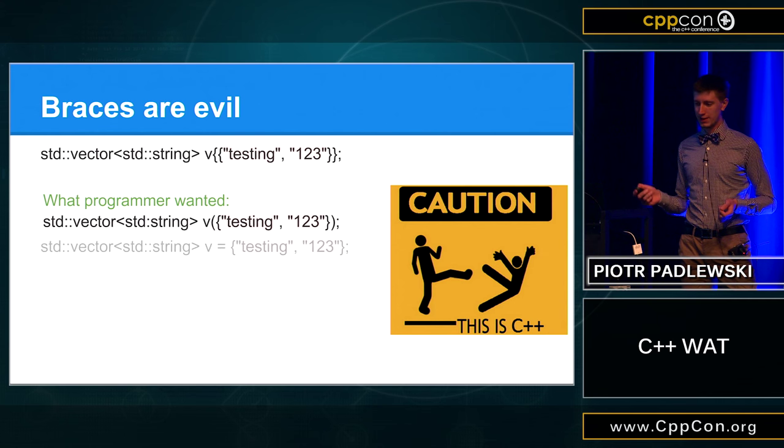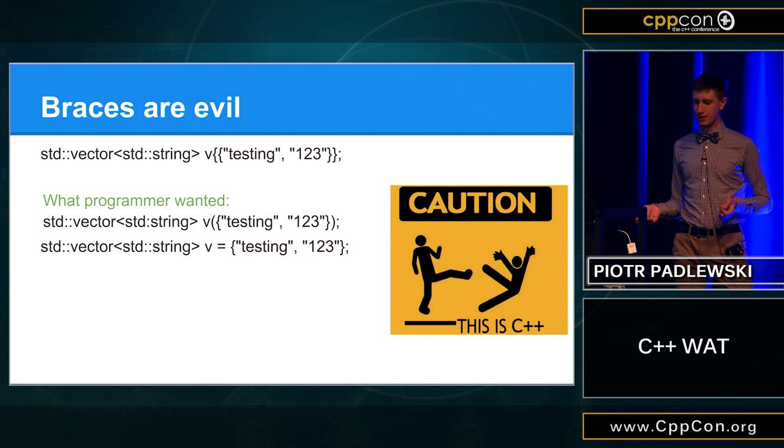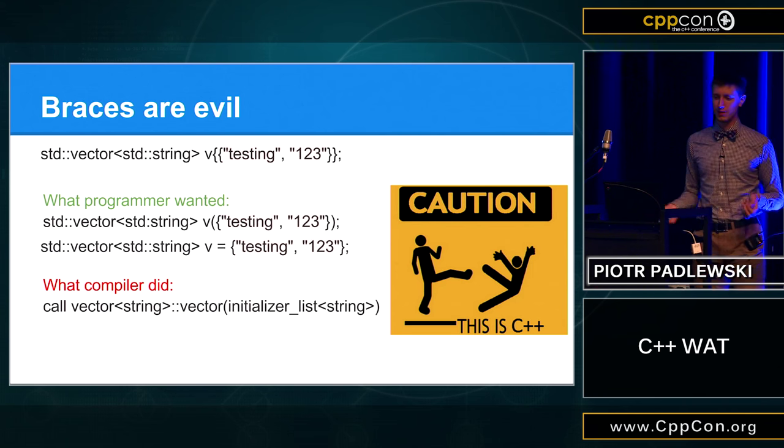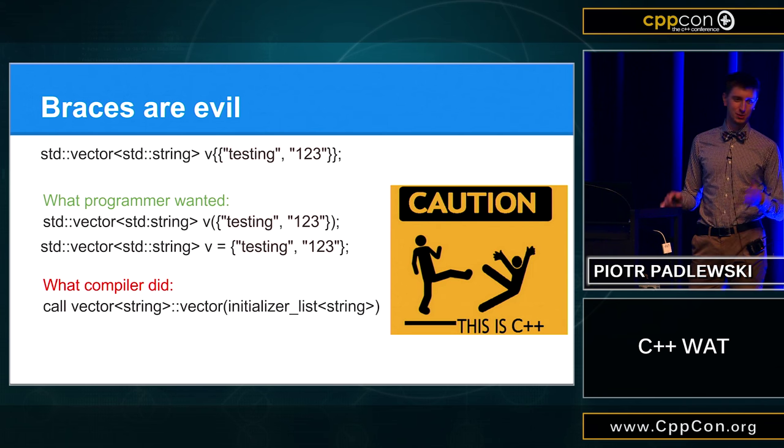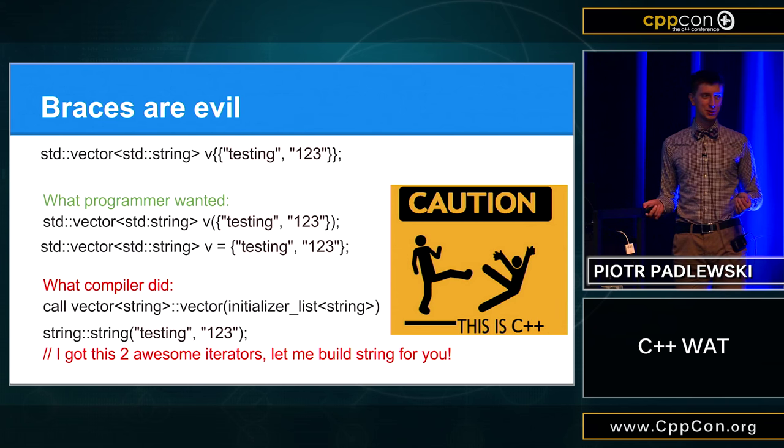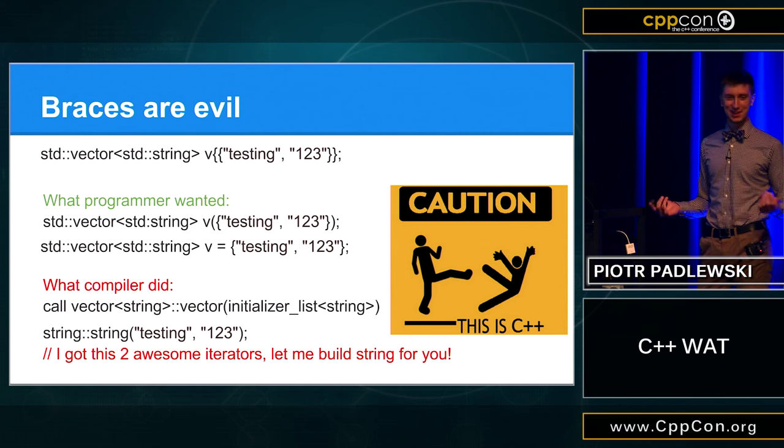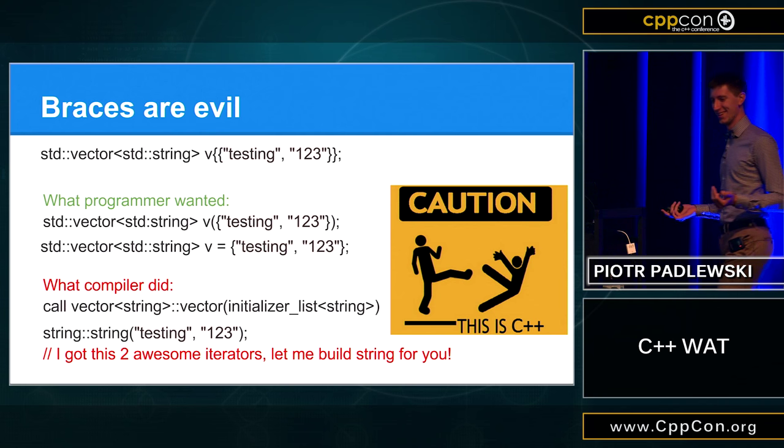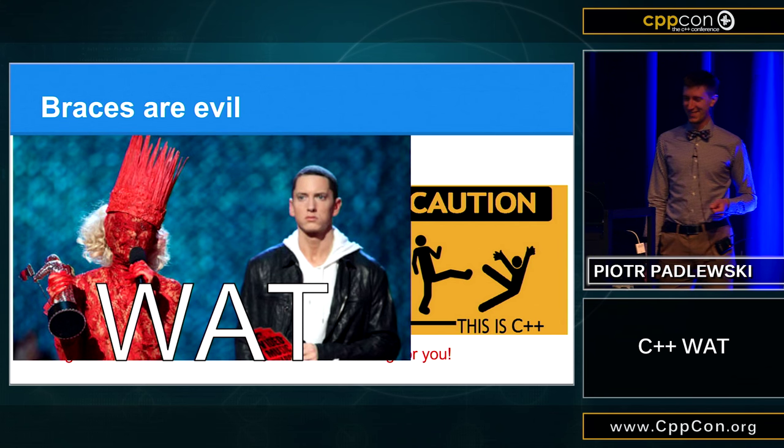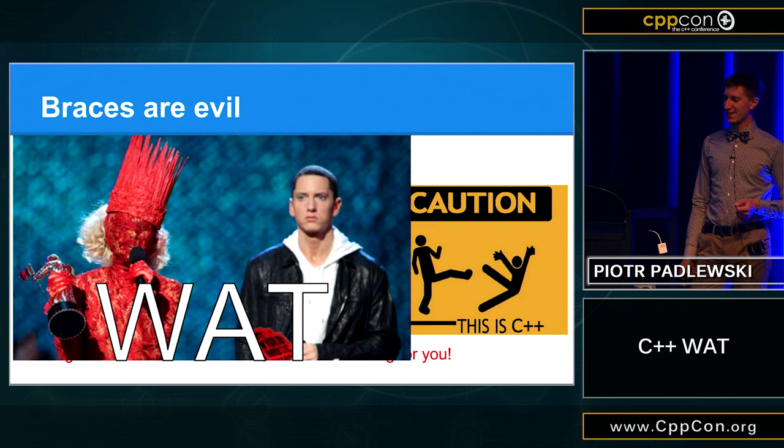And, what compiler did is that, okay, so, let's build the vector from initializer list, which is okay. But then, hmm, let's build this string with two iterators. What can go wrong, right?